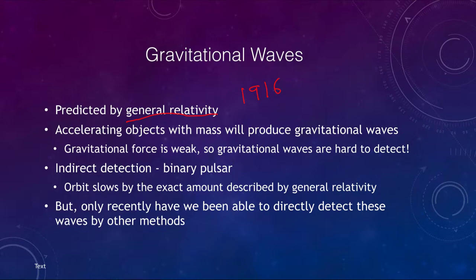Any accelerating object with mass will produce gravitational waves. That can mean you, that can mean me, that can mean the Earth, the Moon, the Sun — anything that is accelerating will produce these gravitational waves.